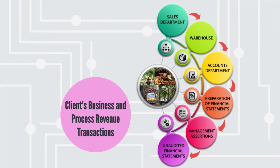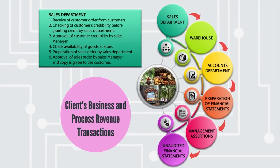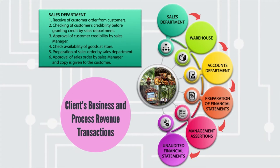A poster is provided that outlines the business processes involved in recognizing revenue by business operators, interchangeably known as the clients. The revenue transactions are initiated by the receipt of a customer order. Throughout the business processes in respect of revenue transactions, there are control measures that must take place. The first control is checking the customer's credibility before granting credit, carried out by the sales department. This internal control is important to ensure the business operators only approve customers who have a healthy financial position, so they are able to receive payments for products sold or services rendered.